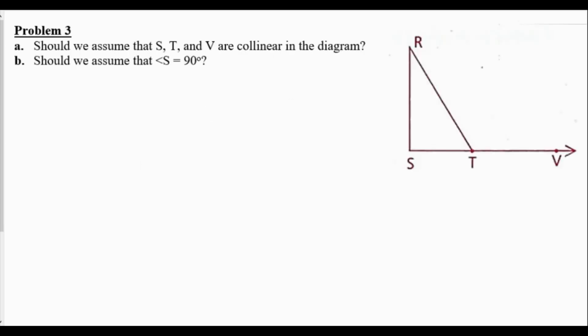Problem three: should we assume that S, T, and V are collinear in the diagram? S, T, and V are on the same line, therefore yes, we can assume that. Should we assume that angle S is 90 degrees? Angle S is not stated as a right angle and does not have the right angle box, so no, I cannot assume that angle S is 90 degrees.